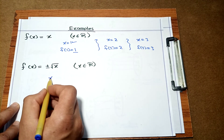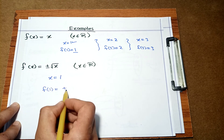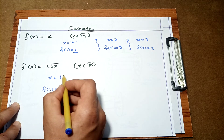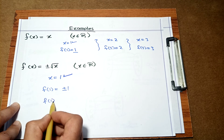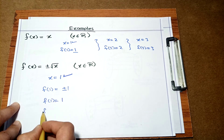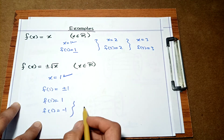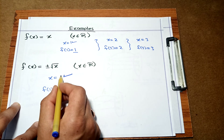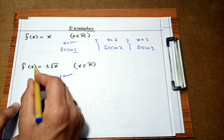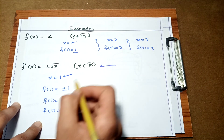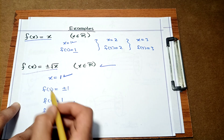Now consider another example where when we put x = 1, we get f(1) = ±1 — two outputs: plus 1 and minus 1 from a single input. Since one input gives two outputs, this does not satisfy the definition of a function. So this f(x) is not a function.